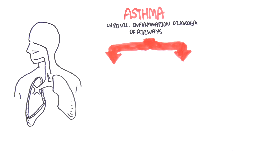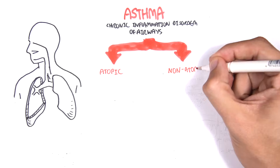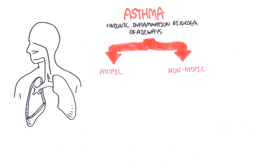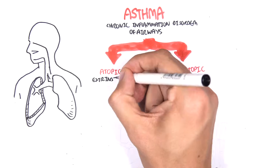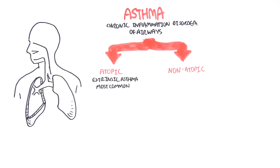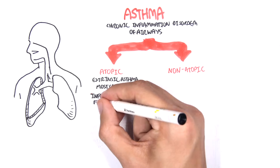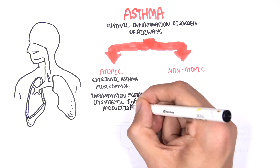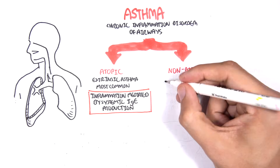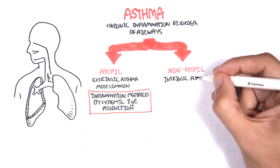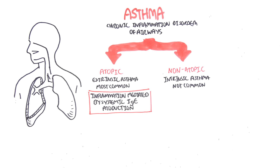Asthma can be divided as either atopic or non-atopic. Atopic asthma is extrinsic asthma, meaning it is triggered by the environment, and this type of asthma is the most common. Atopic asthma involves inflammation mediated by systemic IgE production. Non-atopic asthma, on the other hand, is intrinsic asthma and is far less common.